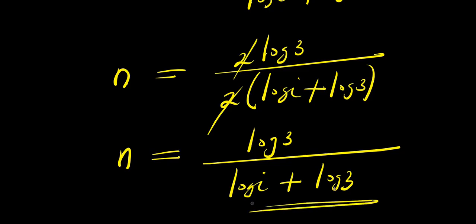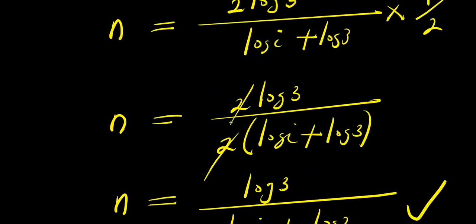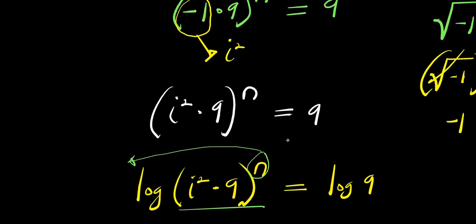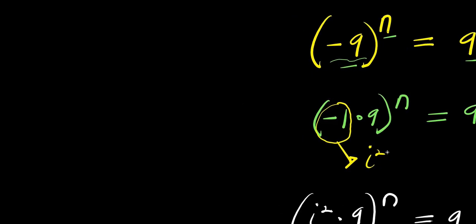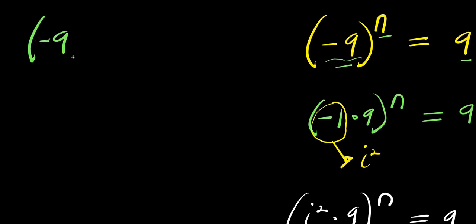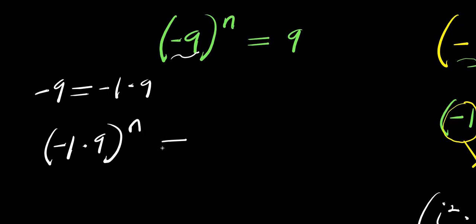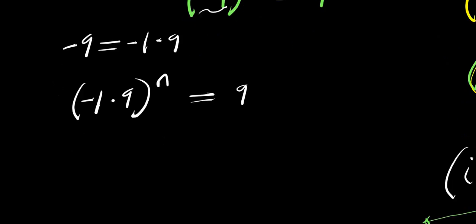Now let's consider another method of solving this interesting exponential problem. We go over again: negative 9 to the power n equals 9. Start with the same method — I replace negative 9 with negative 1 times 9. So this will be negative 1 times 9 to the power of n equals 9. And don't forget: if you have (a times b) raised to the power c, this equals a to the power c times b to the power c.